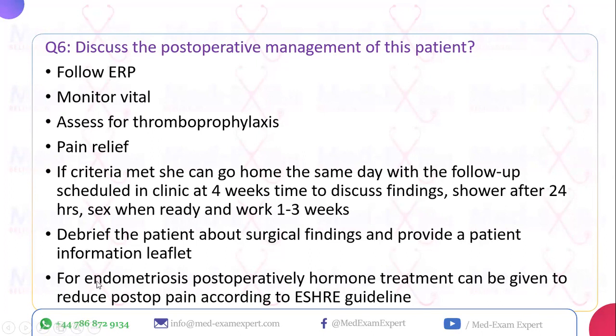Remove as much CO2 from the abdomen as possible, as residual gas causes shoulder-tip pain. Any non-midline port over 7 mm and any midline port greater than 10 mm require formal fascial sheath closure to avoid port-site hernia. Close the skin incision with Vicryl Rapide, apply dressing, and complete documentation. Post-operatively, follow the enhanced recovery programme, monitor vitals, assess the need for thromboprophylaxis, and give analgesia. If criteria are met, the patient may go home the same day with a four-week follow-up clinic appointment to discuss surgical findings.